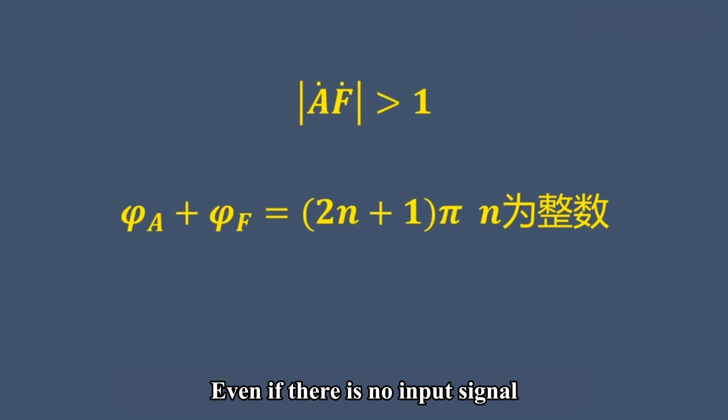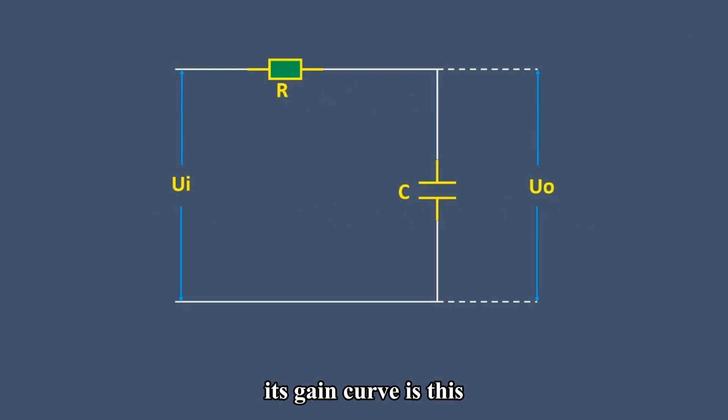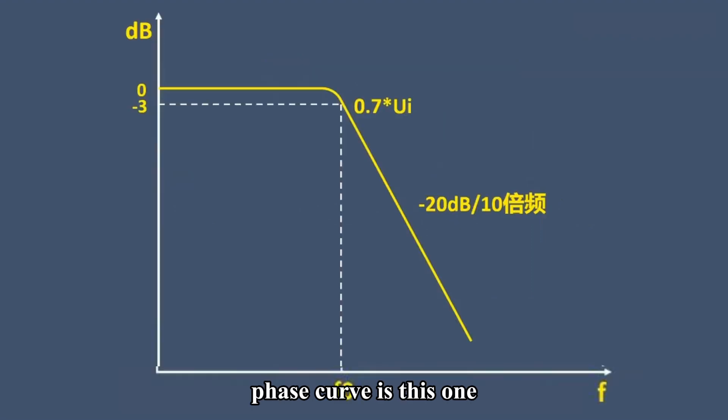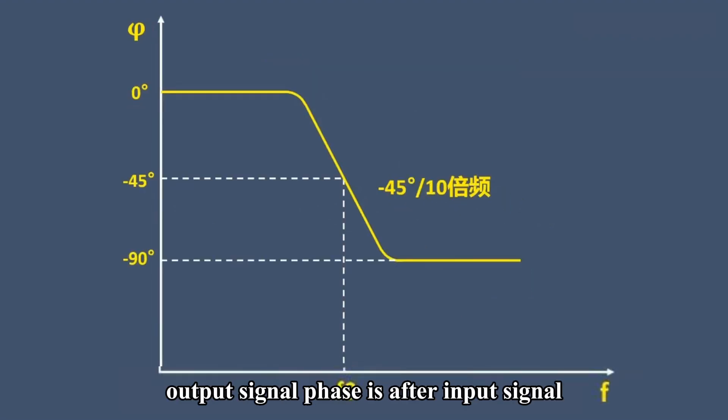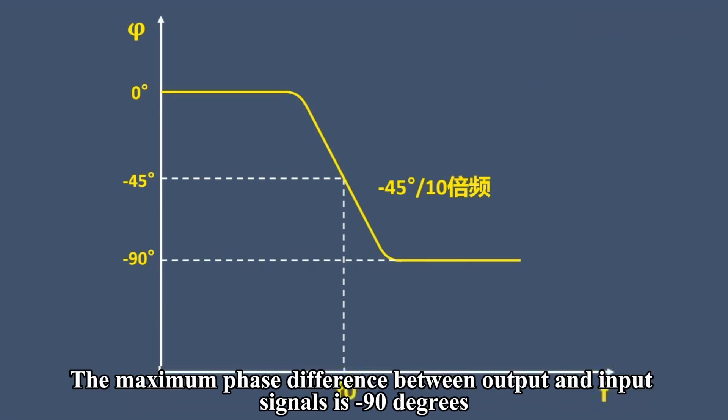Even if there is no input signal, there will be a stable signal output, which means self-excited oscillation occurs. First, look at this RC circuit. Its gain curve is this, phase curve is this one. The output signal phase lags the input signal. The maximum phase difference between output and input signals is 90 degrees.